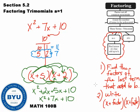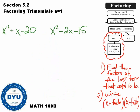Let's look at a couple more examples to make sure you understand this. Again, the process is just finding the factors of the last term that add to the middle term. Here I have two problems: x squared plus x minus 20, and x squared minus 2x minus 15. The first thing you always want to do is check to see if there's any common stuff that factors out. Neither of these has any common stuff.